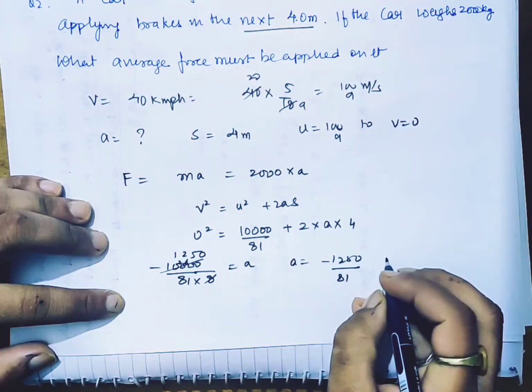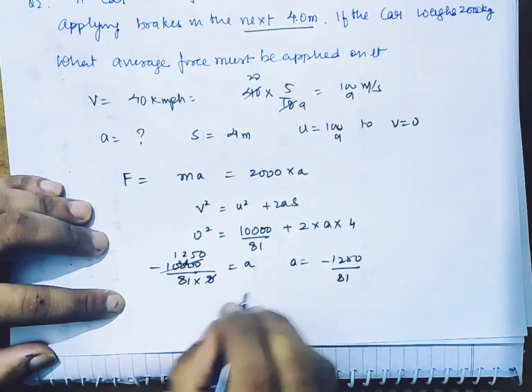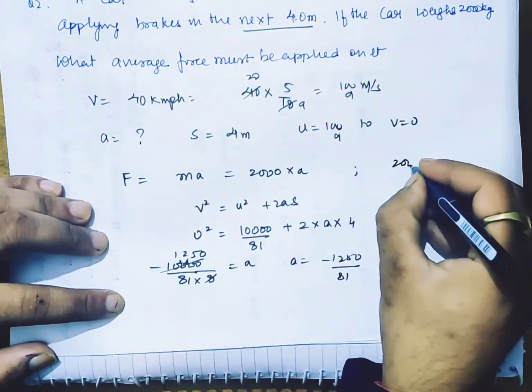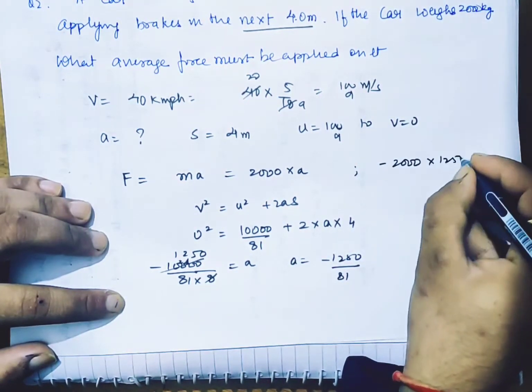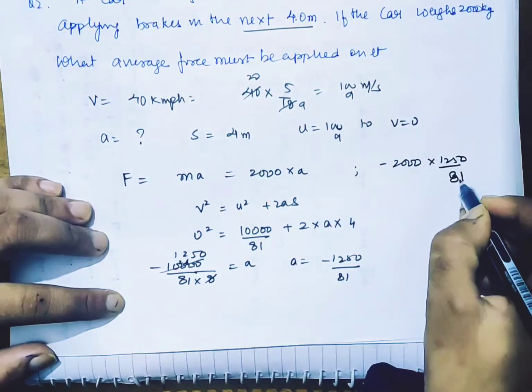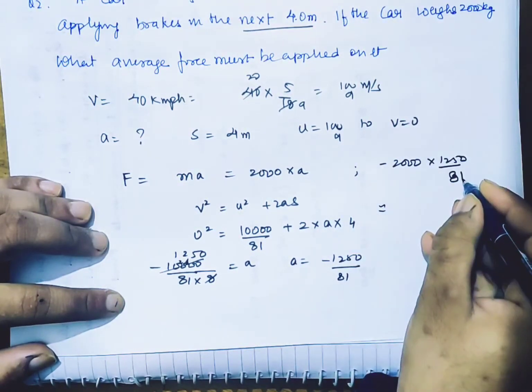Okay, I will keep this here. Now I will solve it: negative 1250 upon 81. I will take approximately 80.